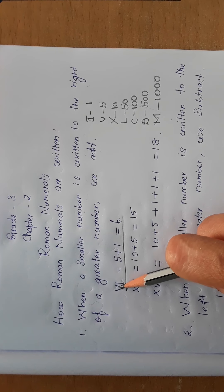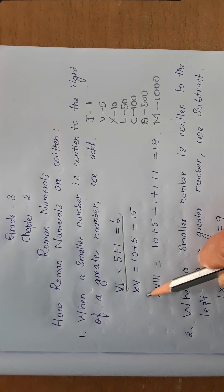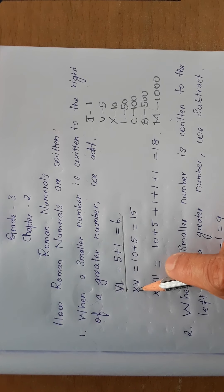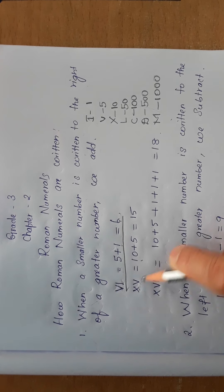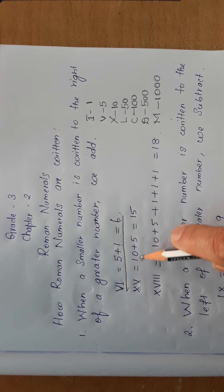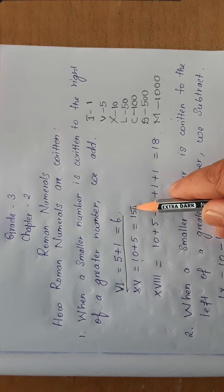Now we know how to write 6 in Roman numerals. When to the right of the greater number smaller number is written, we should add it. See, X is 10 plus V is 5 equals 15. So how to write 15 in Roman numerals? This way: XV, understood?